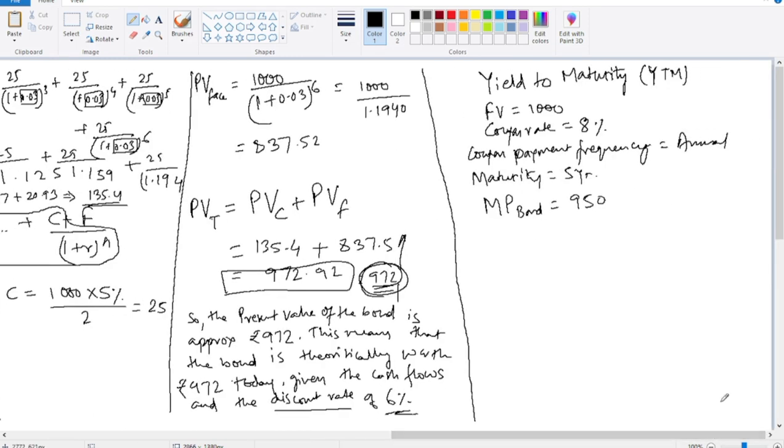Coupon rate 8 percent on 1000, 8 percent annual payment. So 80 rupees, 80 upon 1 plus r to the power 1, plus 80 rupees upon 1 plus r to the power 2.